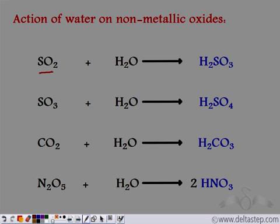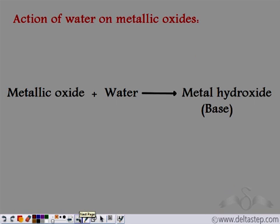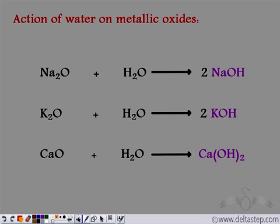When metallic oxides react with water, they form the corresponding metal hydroxides, which are bases. For example, Na₂O reacts with water to form sodium hydroxide, potassium oxide gives potassium hydroxide, and calcium oxide gives calcium hydroxide. So all metallic oxides on reaction with water form the corresponding metal hydroxides, which are bases.